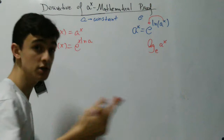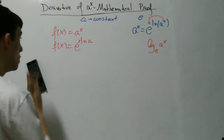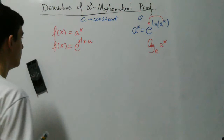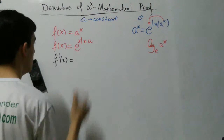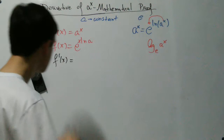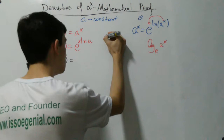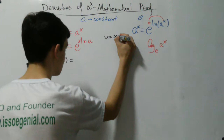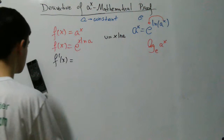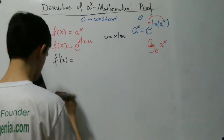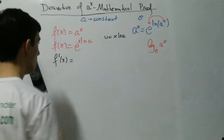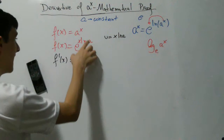Now we are going to take the derivative of this function. So f prime of x is what we want, and we are going to use the chain rule, because we want to know the derivative of this whole function. In order to use the chain rule, we are going to create a variable u, which is equal to x times natural log of a. So f prime of x is equal to the derivative of e raised to x natural log of a. The chain rule says we take the derivative of the outside function and multiply it by the derivative of the inside function.